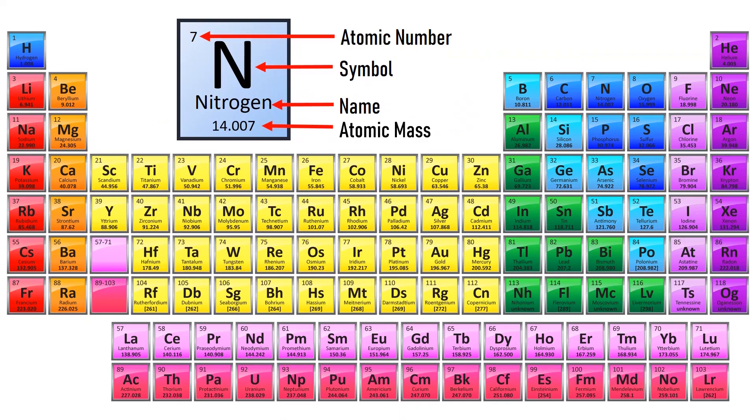So, the total number of protons and neutrons of nitrogen is 14, which is its atomic mass. Let us have other examples.